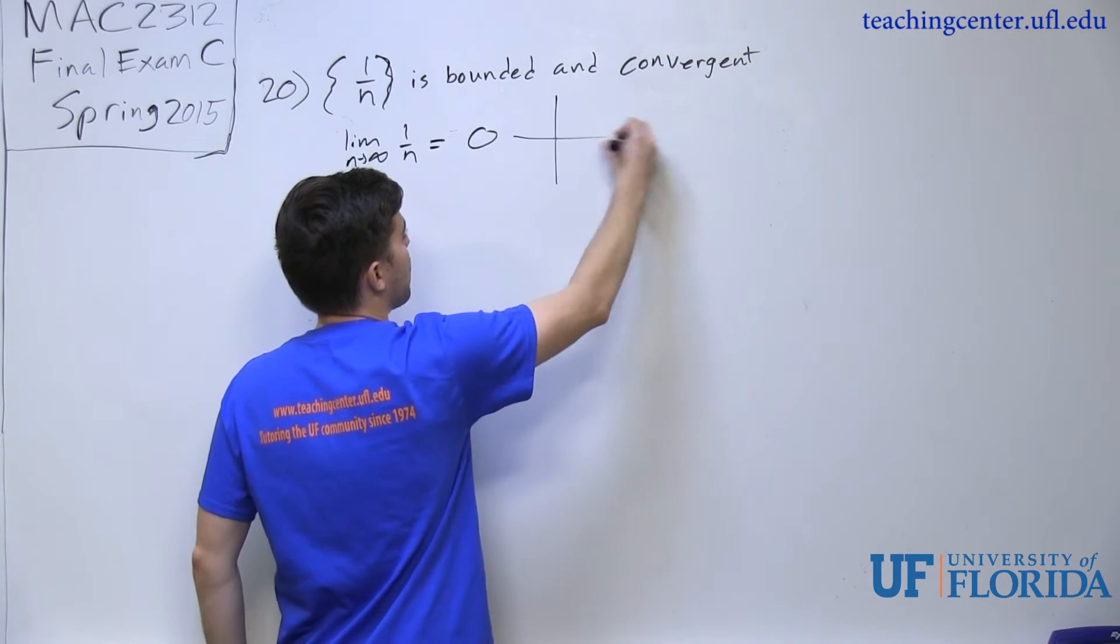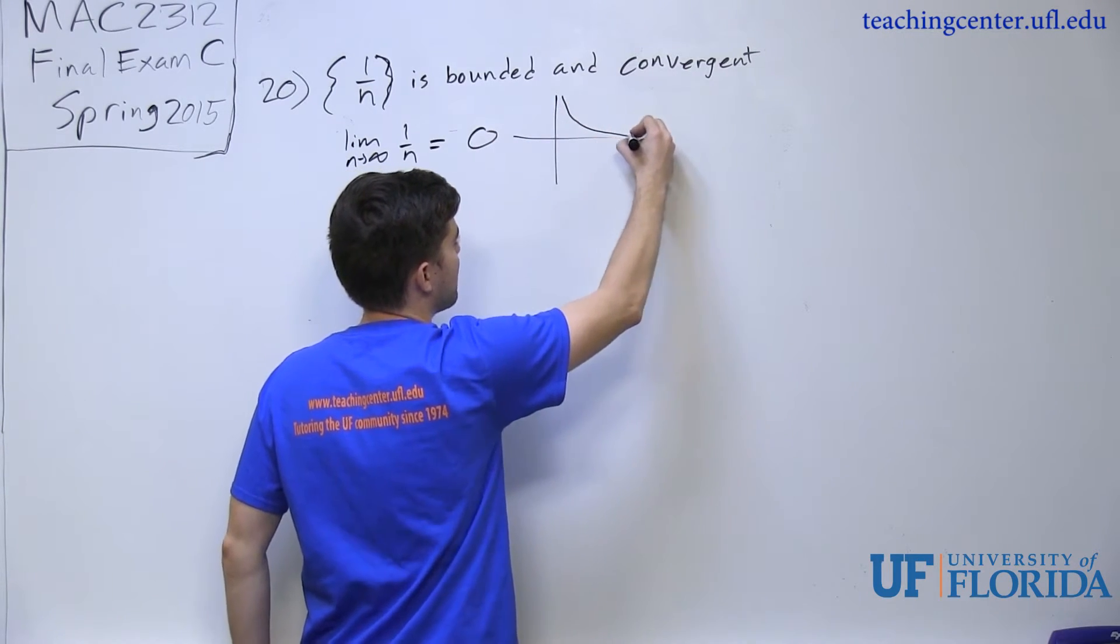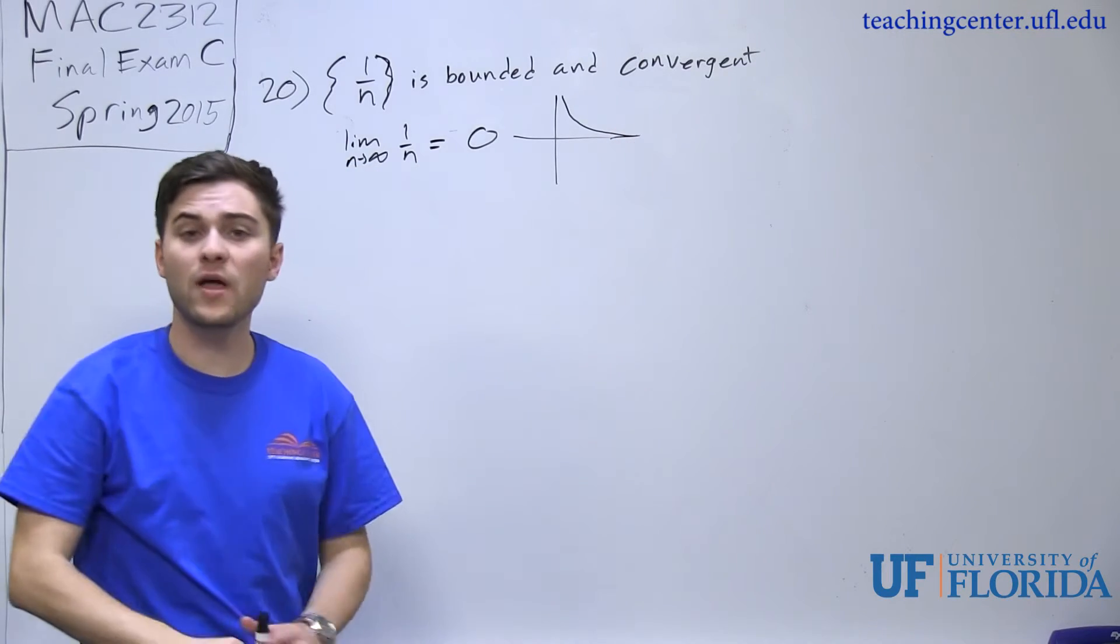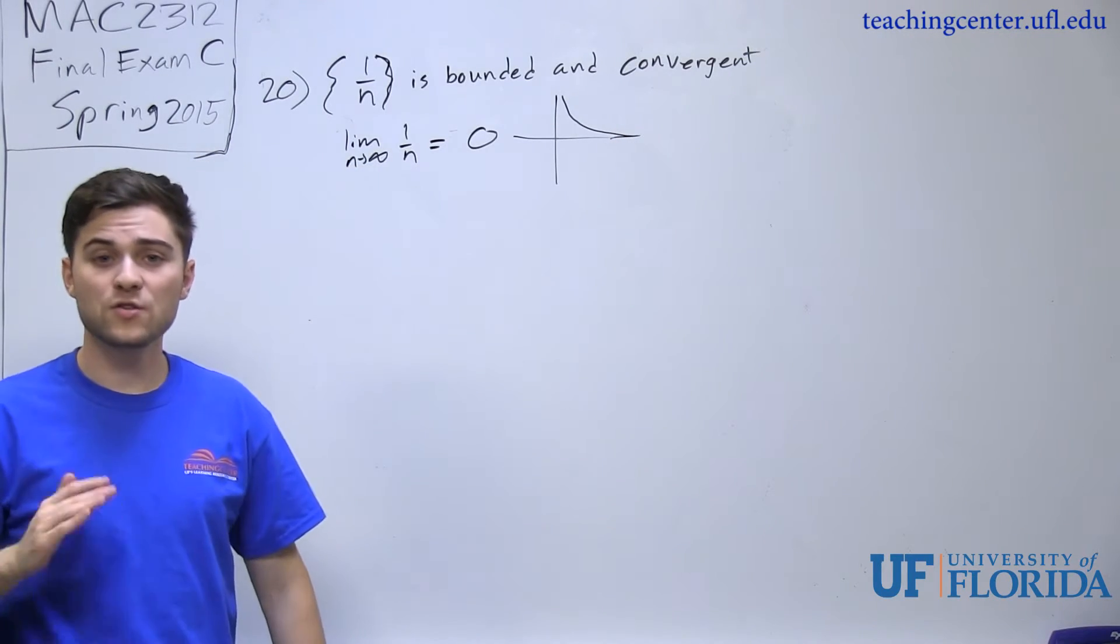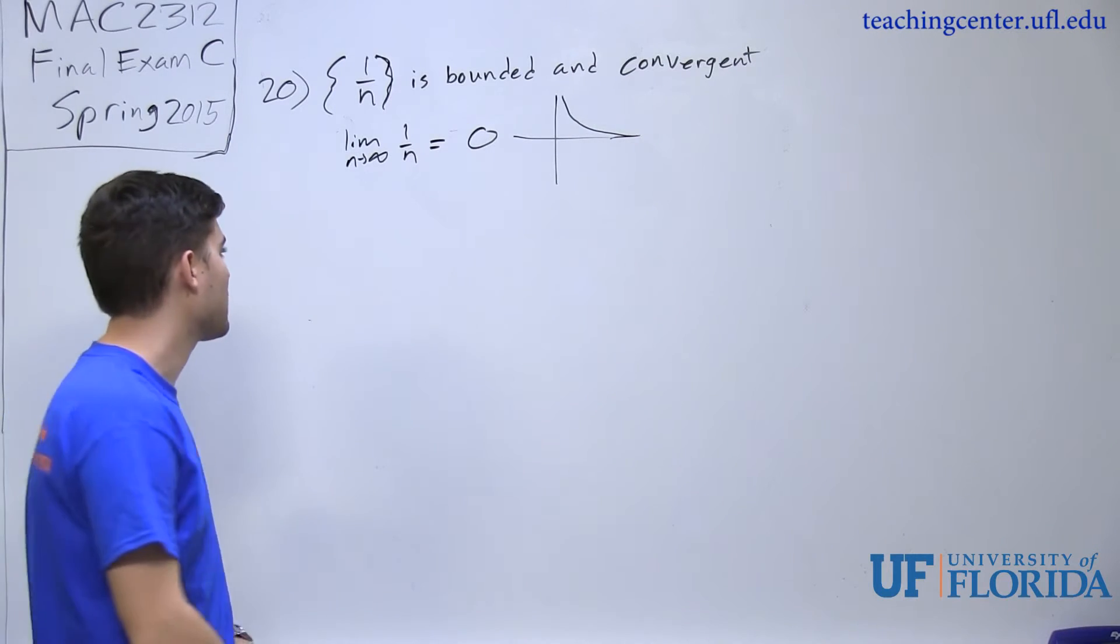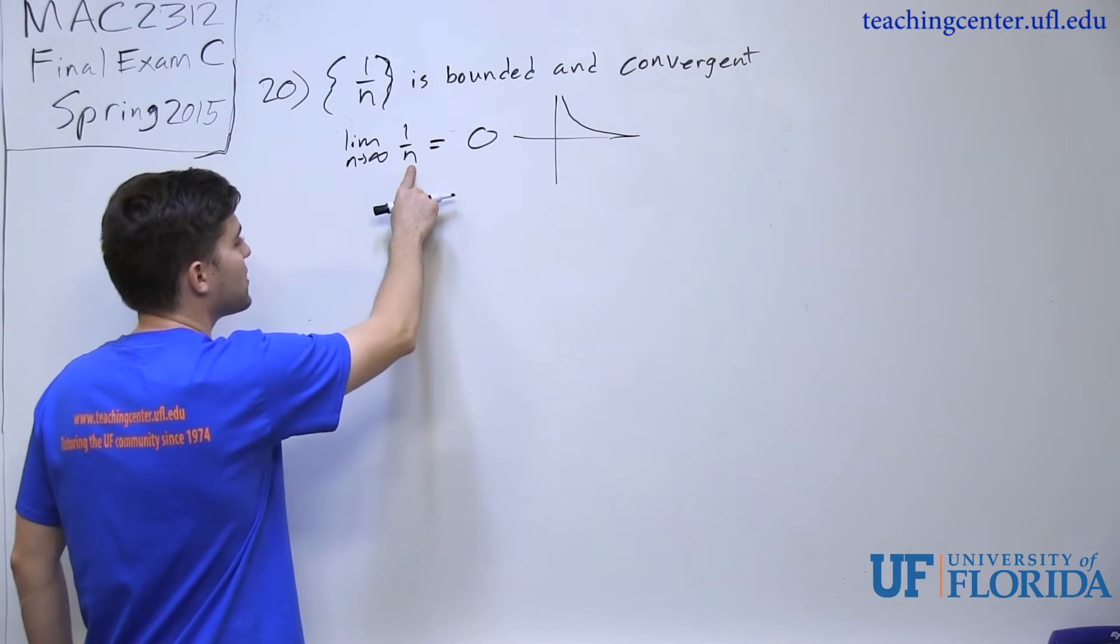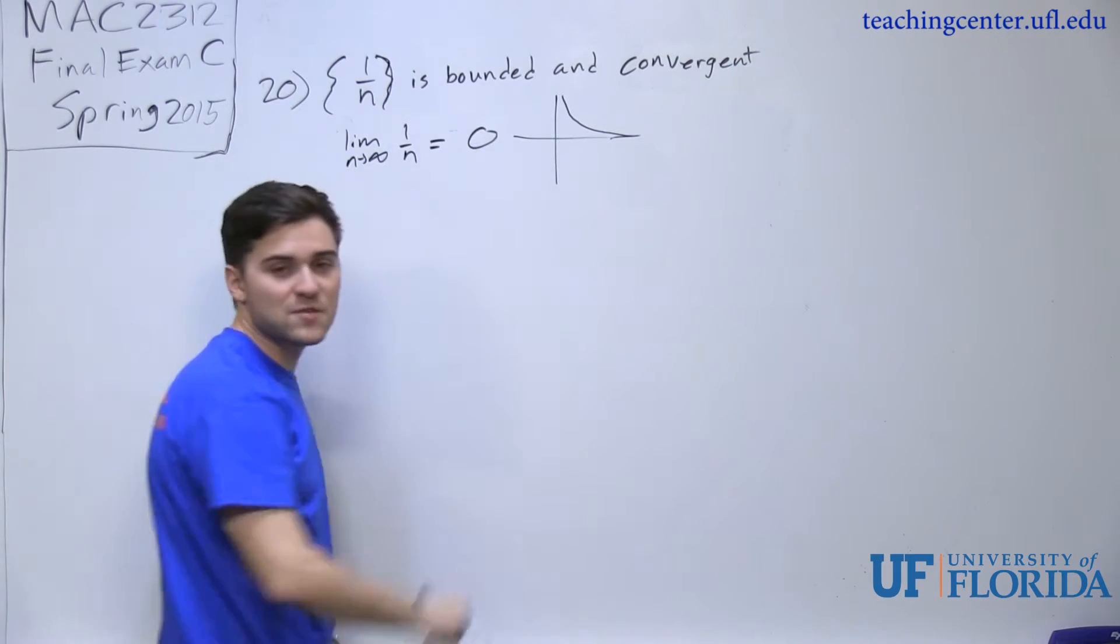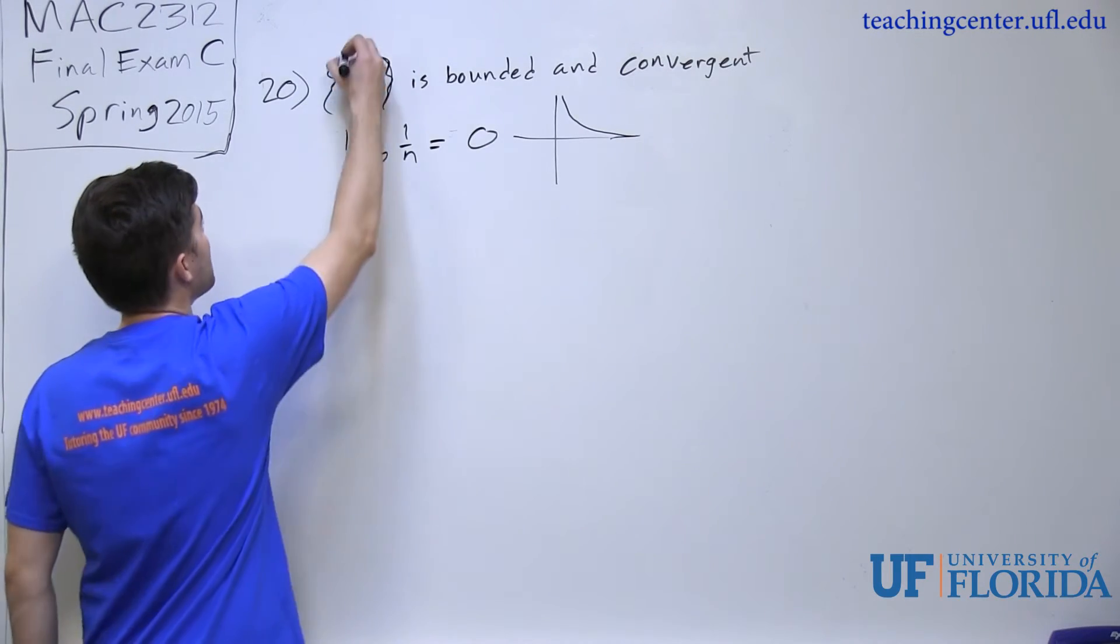Well if I draw the graph for 1 over n, it should look something like this. So it is approaching 0 and it will never go below 0. So therefore because it never goes below that, it is bounded at that x equals 0 value. So it is convergent because it came out to 0 and it is bounded. So that first statement is true.